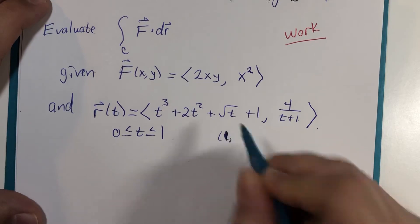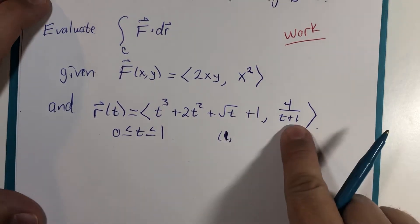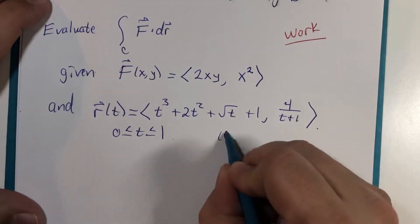And t is 0 here would be 4 over 1, which is 4. So 1, 4.